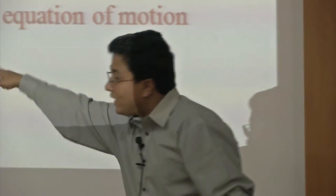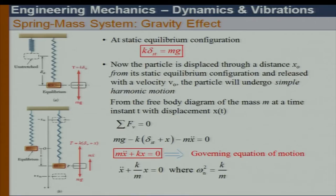Taking equilibrium — sum of forces along x equals zero — gives this equation. Since K·delta_ST equals mg, those two terms cancel each other. So I get m·ẍ + K·x = 0.